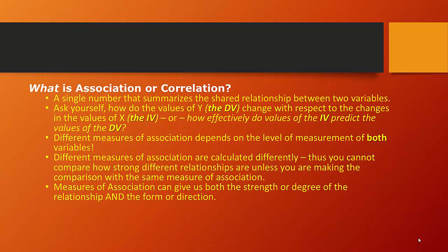What is association? A measure of association, or a correlation coefficient, is a single number that summarizes the shared relationship between two variables. There's a wide range of measures available for describing how strongly two variables are related. Some differ in their basic approach, but even when the basic approach is similar, the measures may differ with respect to the type of data for which they're appropriate. This means that different measures of association are not directly comparable. We should never compare different relationships observed in different tables if they're using different measures of association — we always have to use the same measure.